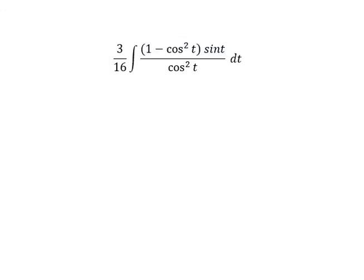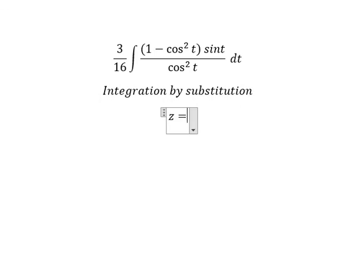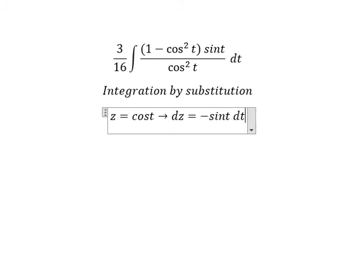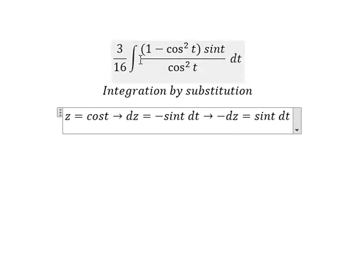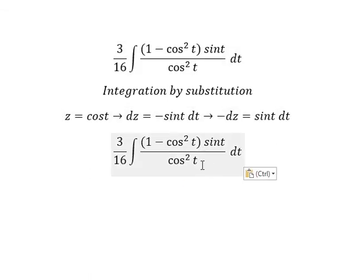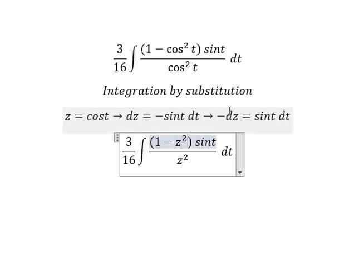Now we need to use integration by substitution. I will put z equal to cos t, so dz equals negative sin t dt. Because we don't have the negative sign here, we apply the negative to dz. cos t squared becomes z squared, and cos t dt becomes negative dz.